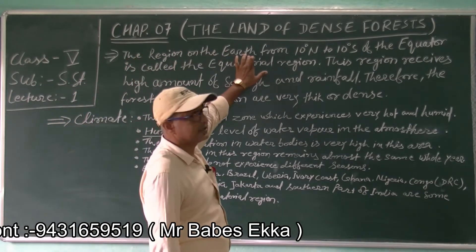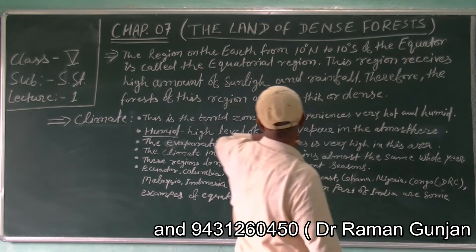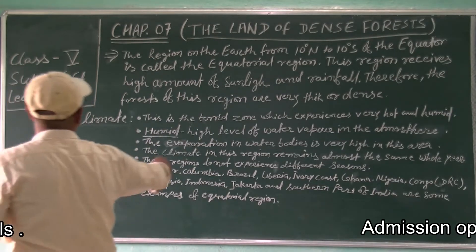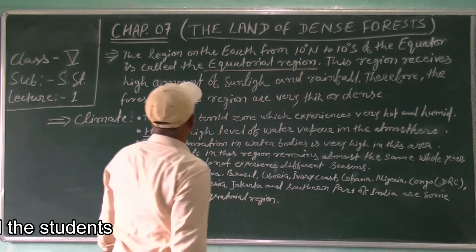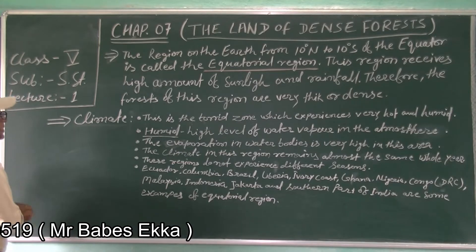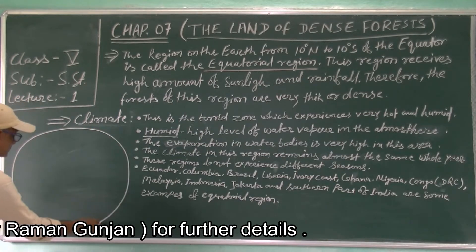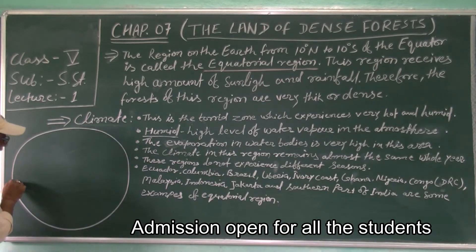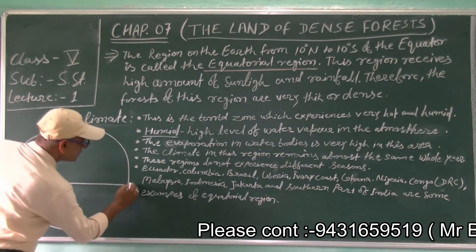The region on the earth from 10 degree north to 10 degree south of the equator is called the equatorial region. Here on the globe, this is the equator, whose value is 0 degree.